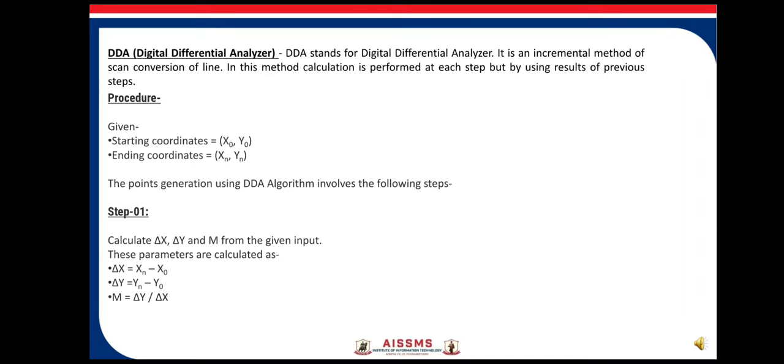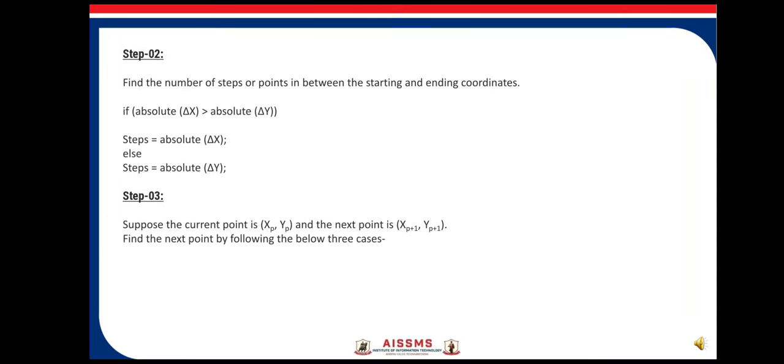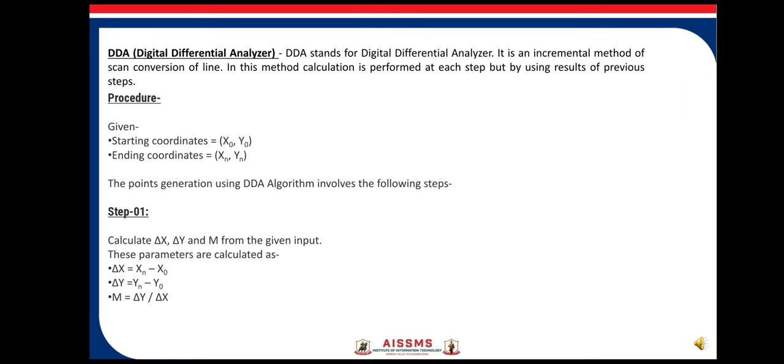Point generation using DDA algorithm involves the following steps. Step 1: Calculate delta x, delta y, and m from the given input. We have already seen about delta x and delta y - delta x is the difference between the x coordinates and delta y is the difference between the y coordinates. So delta x equals xn minus x0, delta y equals yn minus y0, and we can calculate slope m equals delta y upon delta x.